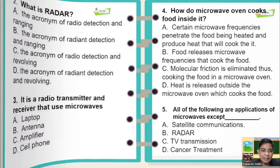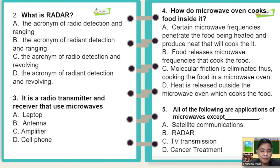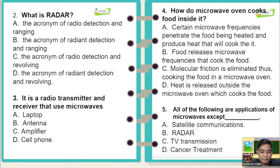Number two: what is radar? A: the acronym of radio detection and ranging. B: the acronym of radio detection and ranging. C: the acronym of radio detection and revolving. D: the acronym of radio detection and revolving. Radar is the acronym of radio detection and ranging.